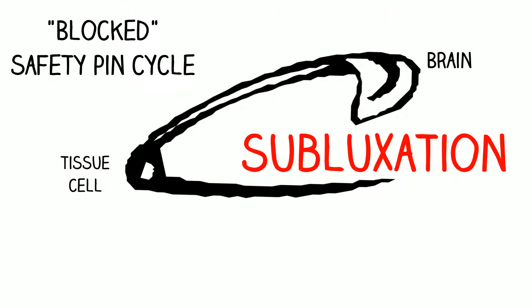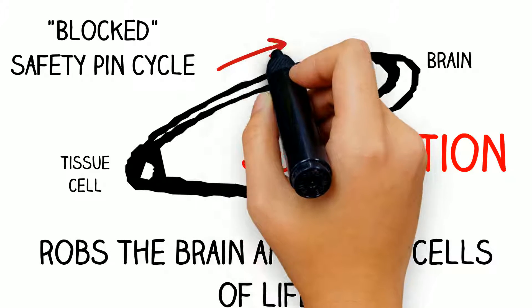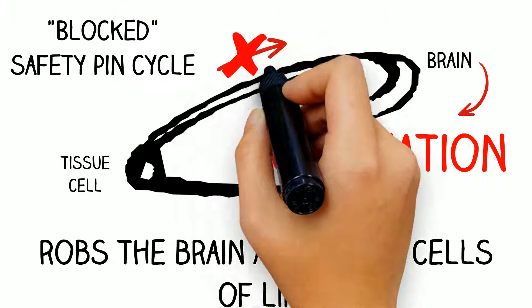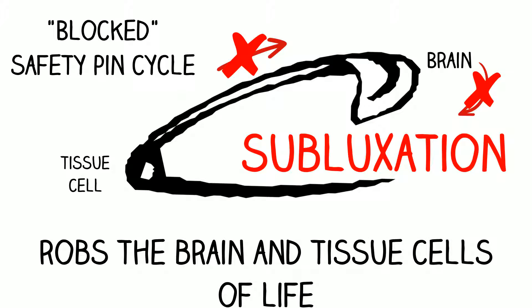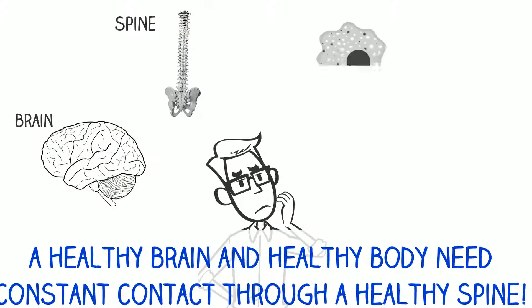This subluxation is pictured by the pin being open. This robs the 100 billion brain cells and 70 trillion tissue cells of life impulses. This subluxation can block messages both to and from the brain at the same time. A healthy brain and healthy body need constant contact through a healthy spine.